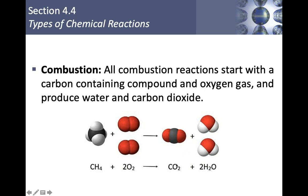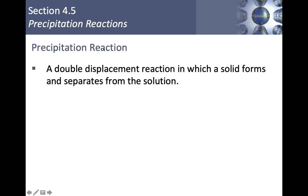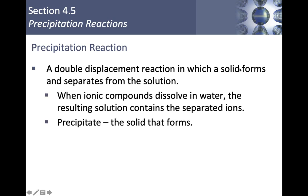With that review done, we can talk about precipitation reactions specifically. A precipitation reaction is a double displacement reaction in which a solid forms. When ionic compounds dissolve in water, the solution contains separated ions that can recombine when mixed with other ions. A precipitate is a solid that forms because of this recombination of ions in solution.